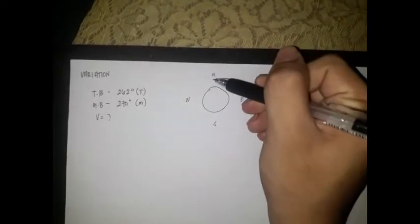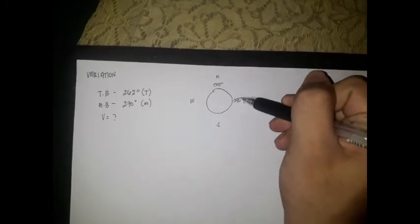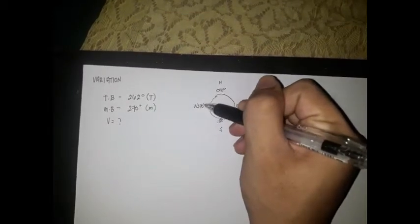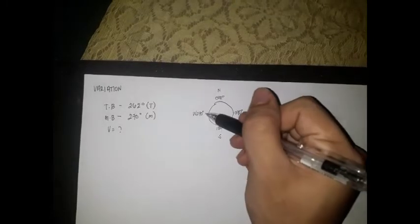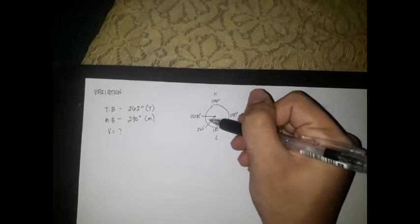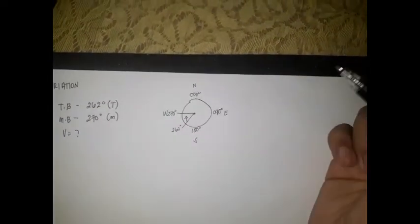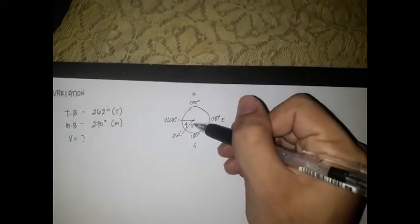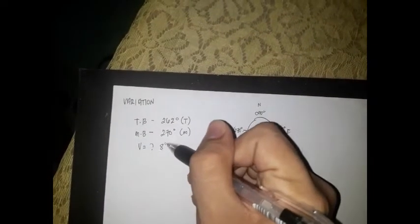For example, our true bearing is 262 degrees true, and our magnetic bearing is 270 degrees. So what is our variation? Using a diagram with north at 000, east at 090, south at 180, and west at 270 — our magnetic bearing is 270 and our true bearing is 262 degrees. Our variation is the difference between 270 and 262 degrees, which is 8 degrees. Our variation here is 8 degrees west.